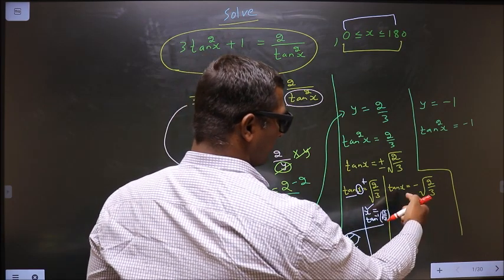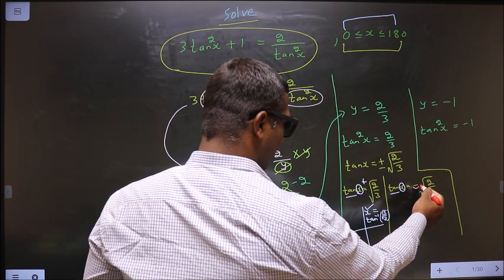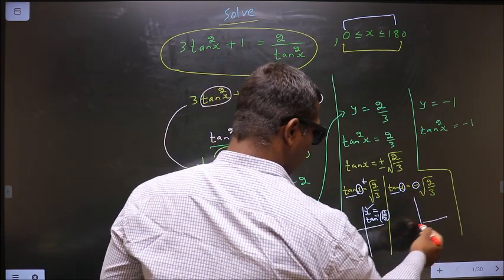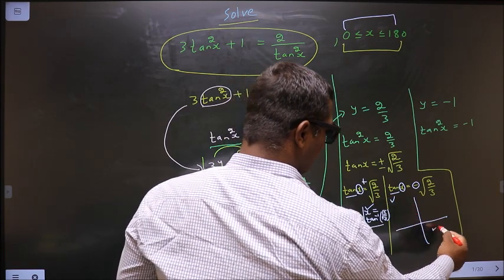Now here to find the values for x, it is tan and here it is negative. So in what all quadrants is tan negative? Tan is negative in the second and in the fourth.